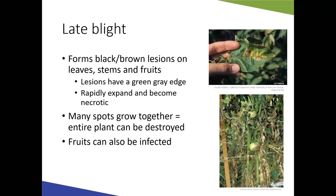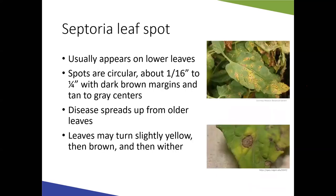Late blight is a Phytophthora disease — the same pathogen that caused the Irish potato famine. It forms black or brown lesions on leaves, stems, and fruit. The spots can coalesce and create large blighted areas, potentially destroying the entire plant. Fruit damage appears as brownish, water-soaked areas. Since tomatoes and potatoes are related Solanaceous crops, this pathogen can infect both.